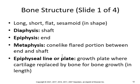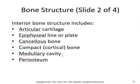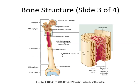Fractures through growth plates often occur with skateboarding, snowboarding, or other extreme sports. The bone structure includes cancellous bone, compact bone, a medullary cavity, and the periosteum. The epiphyseal line closes around age 18 in long bones and 25 in the vertebrae — so technically you do grow until about age 25.